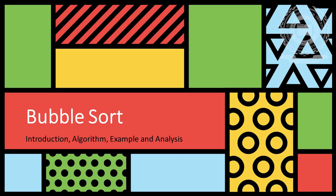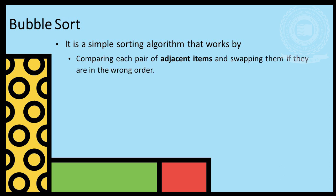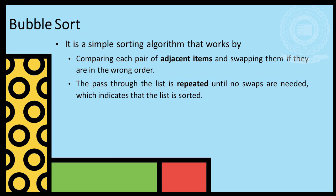In this video, we will cover bubble sort introduction, algorithm, examples and its analysis. Bubble sort is a simple sorting algorithm in which we compare the adjacent pair and swap if they are not in sorted order. And we keep on repeating this procedure till array is sorted.